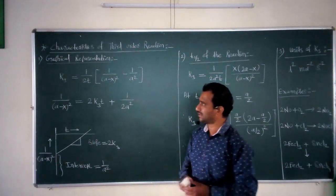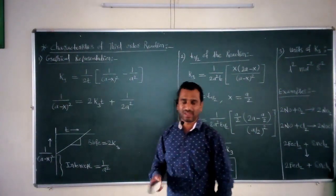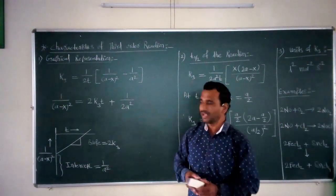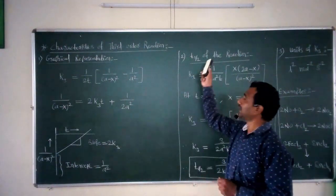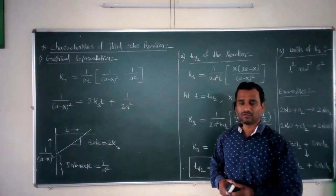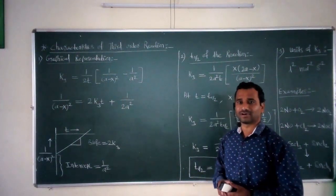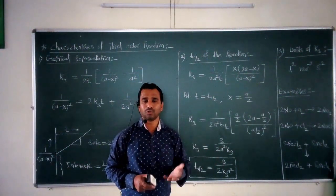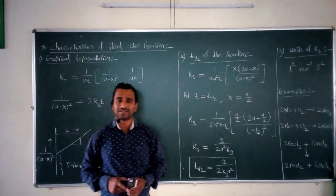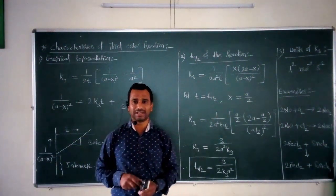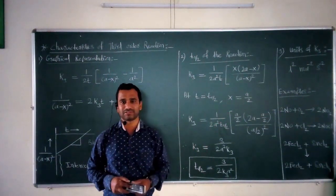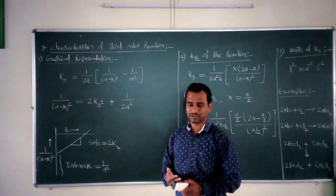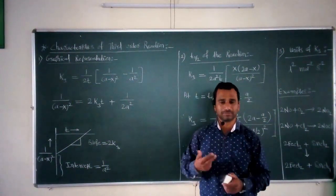The first important characteristic is called as the graphical representation — how to represent it graphically. The second important characteristic is called as the T-half of the reaction, that is the half-life period. The third important characteristic is called as the units of rate constant, K3. And at the last, we have to study some simple examples of this particular third order reaction.